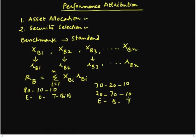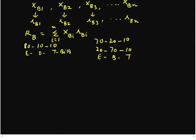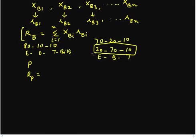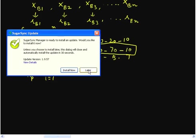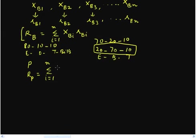Let us say I do decide to deviate from the agreed-upon weightings. What will happen then is that I'm going to create a new portfolio. Let us say this portfolio is called portfolio P. Like we calculated the return for our benchmark portfolio, we can calculate the return for the new portfolio that I'm constructing by deviating from the agreed-upon weightings for equity, bonds, and T-bills. The return for that would be, summation of i varying from 1 to N of XPi times RPi. This is the return on the portfolio that I have constructed.